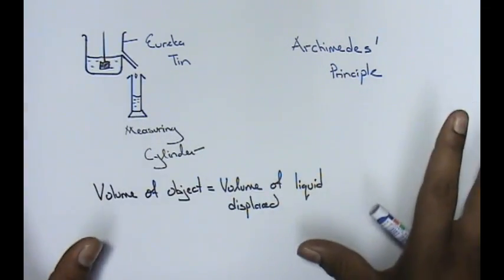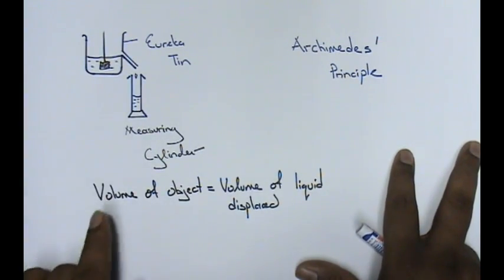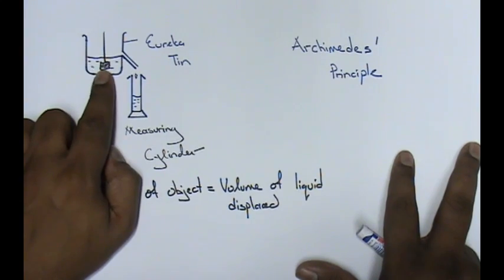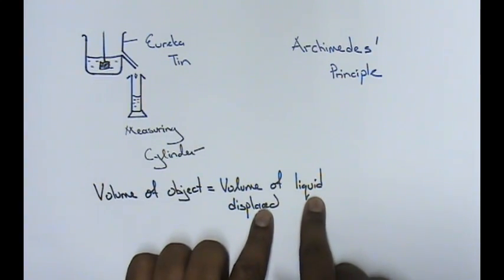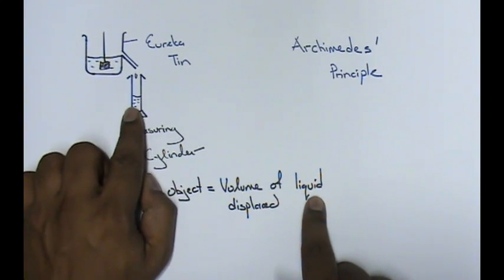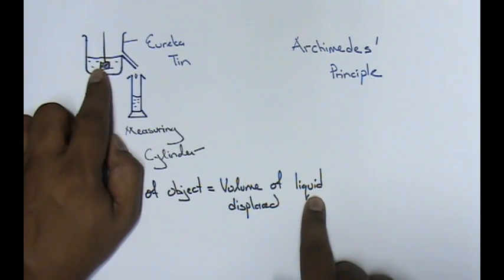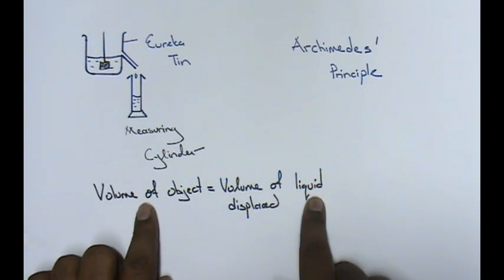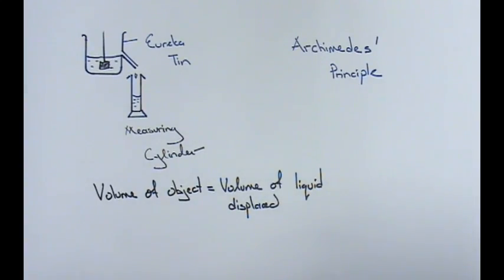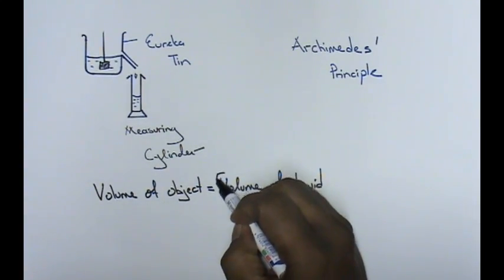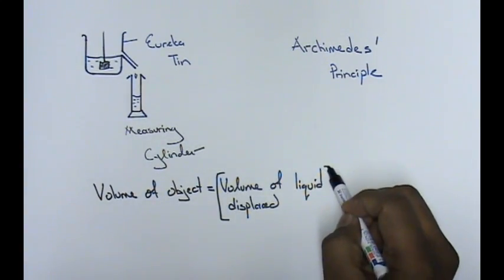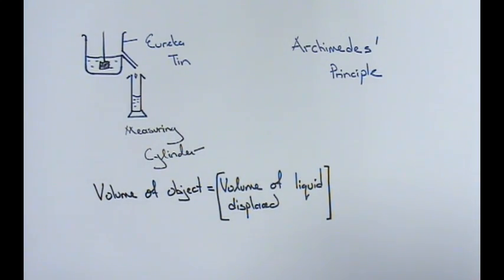You have already studied this in Standard 6, so it's easy. The volume of object equals the volume of liquid displaced. So the amount of water that comes out here equals the volume of the object. What we are going to do is take this volume of liquid displaced.